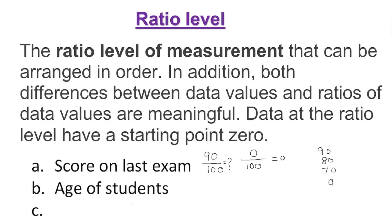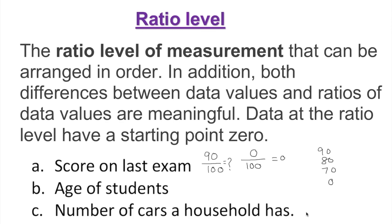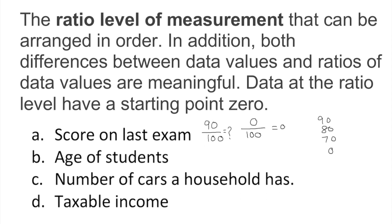Number of students is also ratio level — same reasoning applies. And taxable income is also ratio level, because zero means no taxable income, which is a true natural zero.